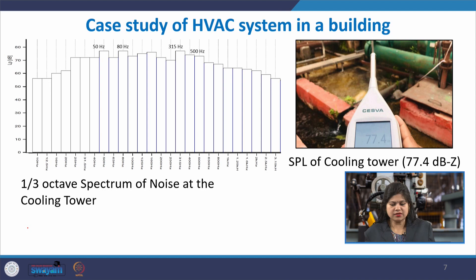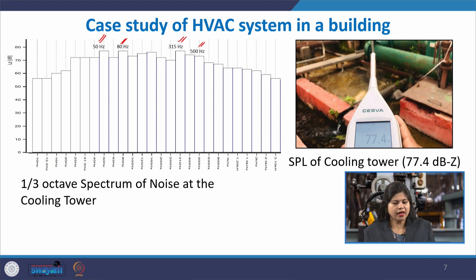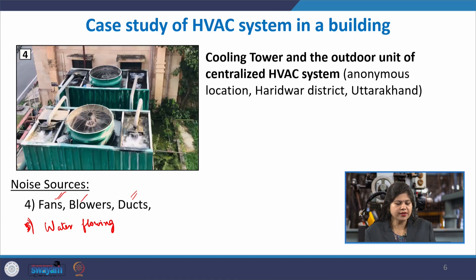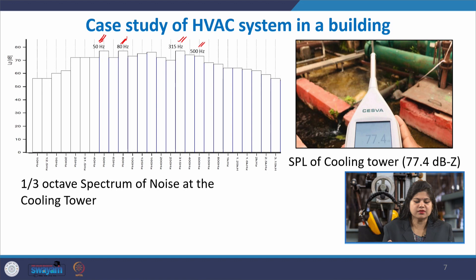We measured the noise level at the outdoor unit — it was around 77.4 dB Z — with octave spectrum peaks around 50 Hz, 80 Hz, 315 Hz, and 500 Hz. The outdoor unit has more fan noise; the noise is both structure-borne and airborne from fan noise and water flowing. The overall spectrum is more broadband with small, non-sharp peaks rather than sharp tonal peaks.